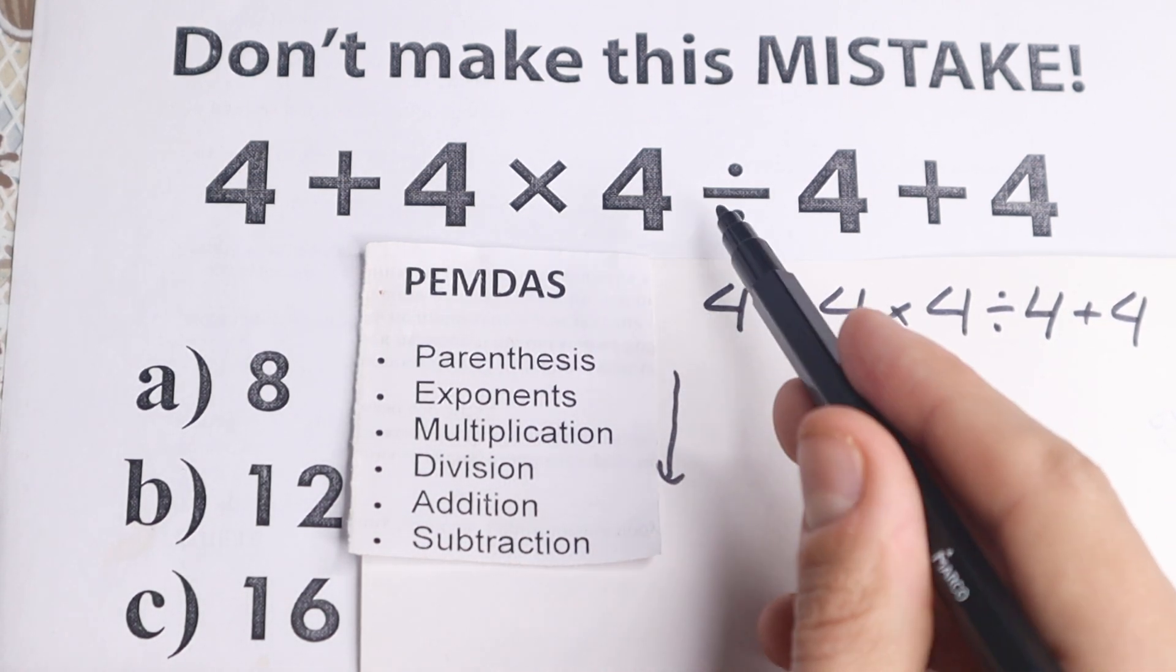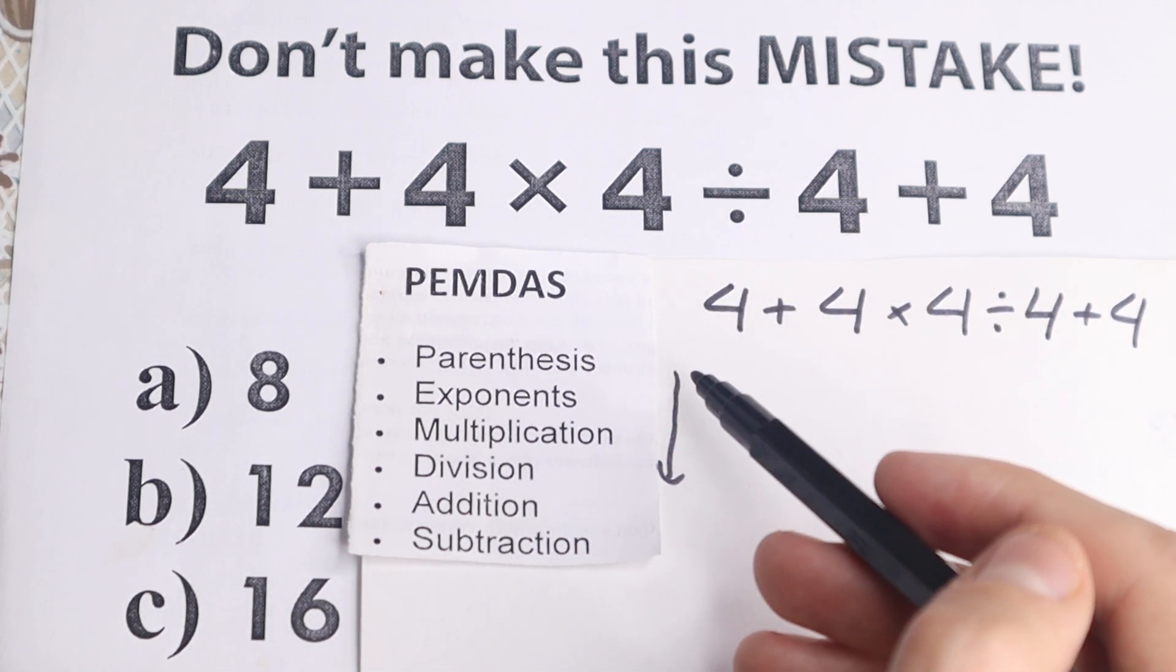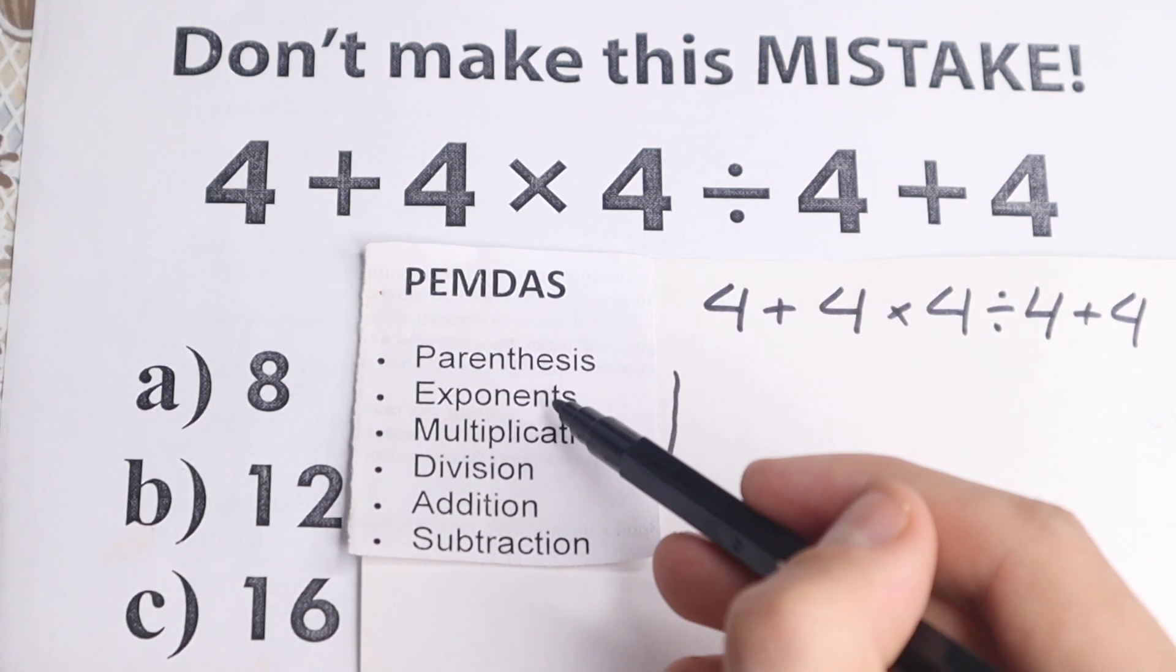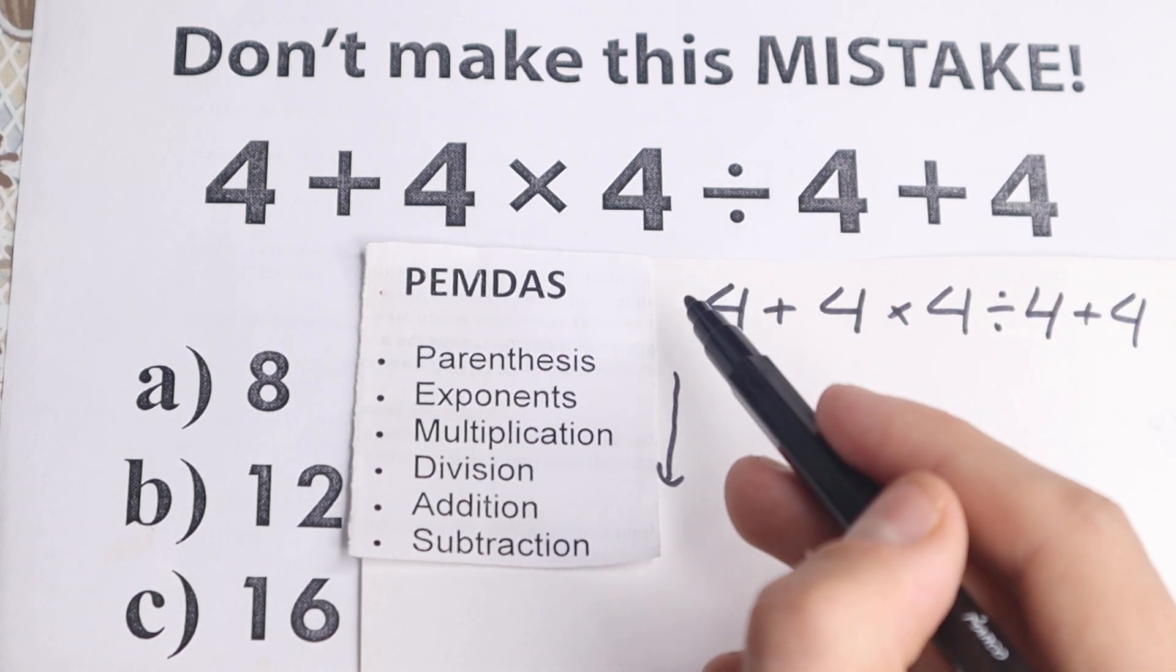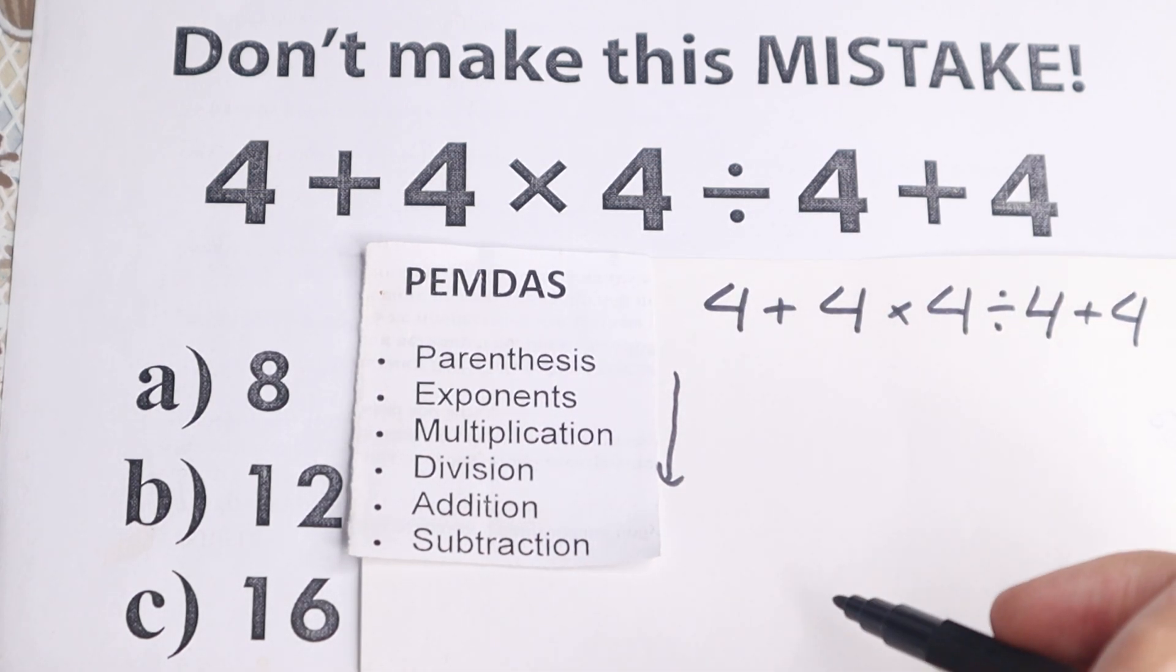The first step parentheses, so are there any parentheses right here? No, I don't see any of those, so we skip this part. Exponents, we don't have any squares, cubes right here, so which is really great, we just skip this part as well.